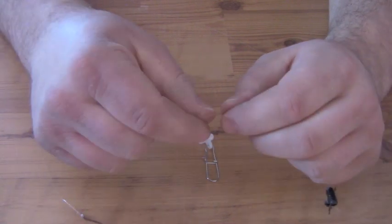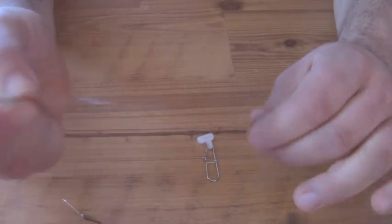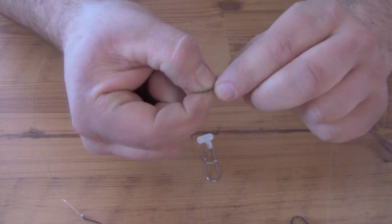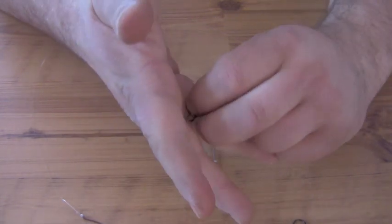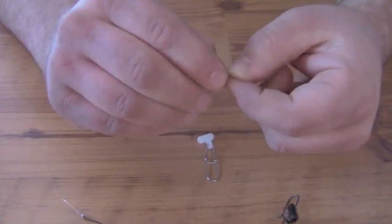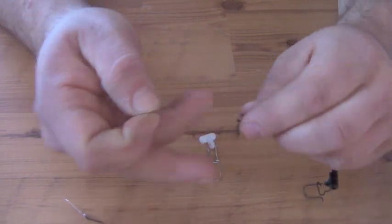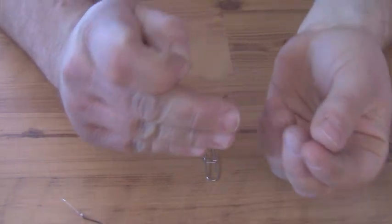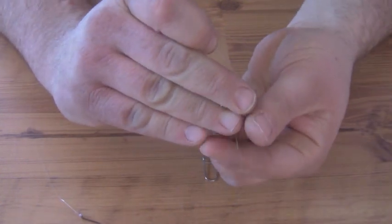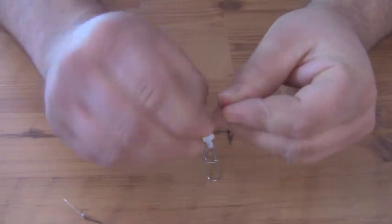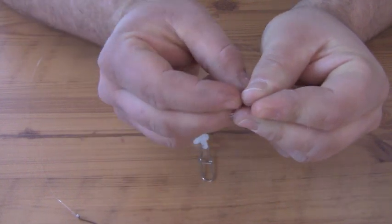Then you're going to take your swivel and tie it on to the line with the slider already attached. I'm going to use the polymer knot. If you guys don't know what the polymer knot is, I will attach a file in the description below.